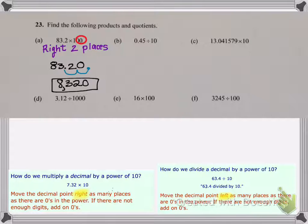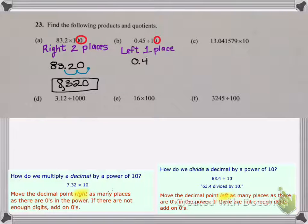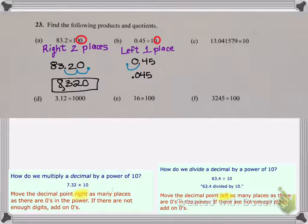Let's look at part B. I'm dividing so that tells me I'm moving to the left. The number 10 has one zero so I move to the left one place. So I have 0.45 and I'm going to move that decimal point one place to the left. That's going to become 0.045, and it's always nice when your decimal is smaller than one to fill in that ones place with a zero, just to be clear that it's 0.045.